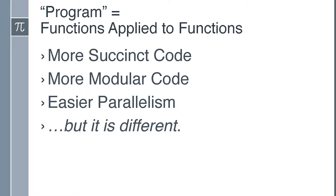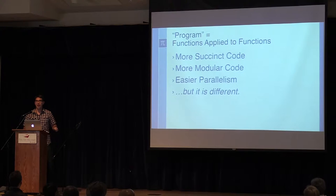If we define a program as just functions applied to functions, we get a few benefits. First, it tends to be more succinct code — you can express things in much fewer lines. There's a famous saying: errors equal more code squared. The more code you add, the more defects you have. If you can make things more succinct, you'll often find you also have fewer defects.